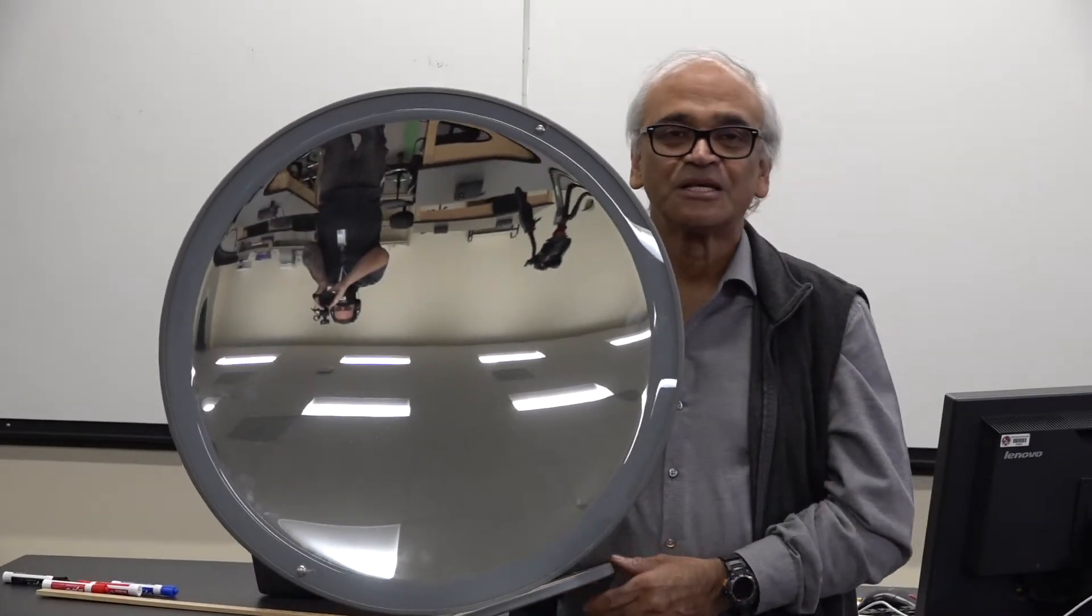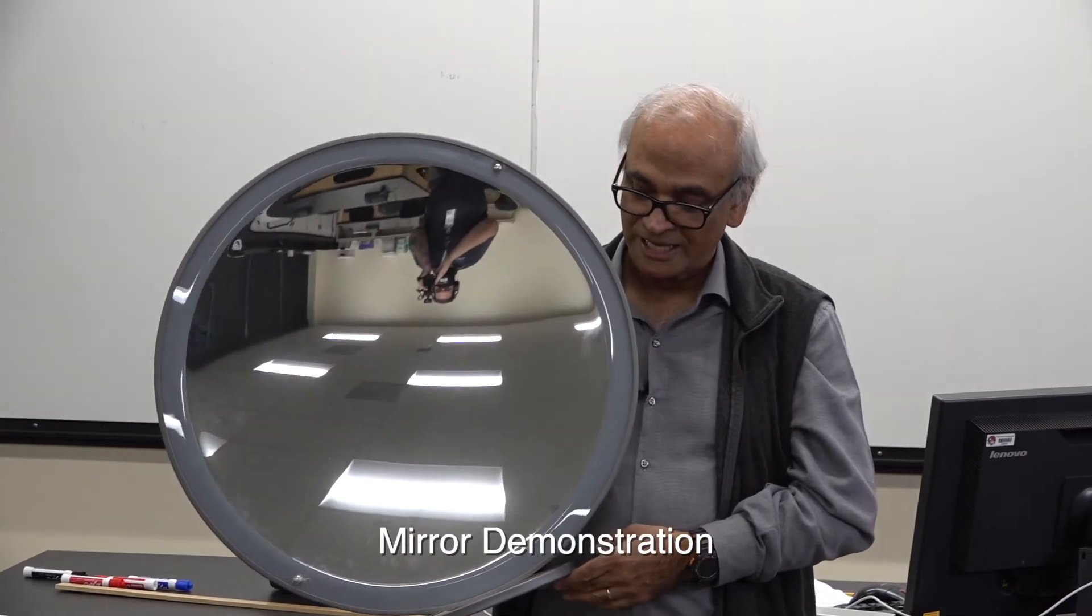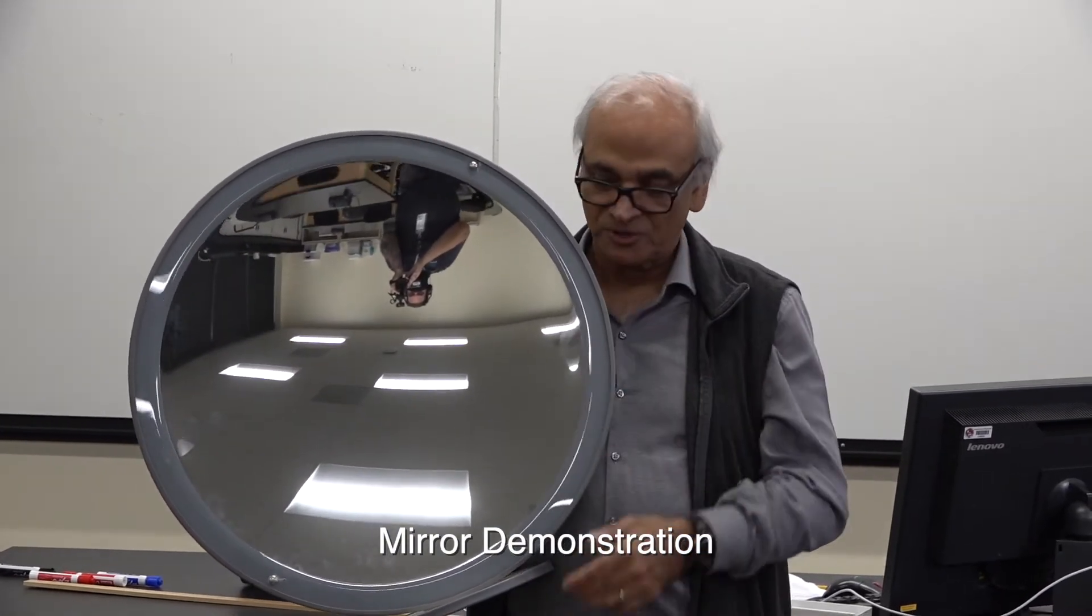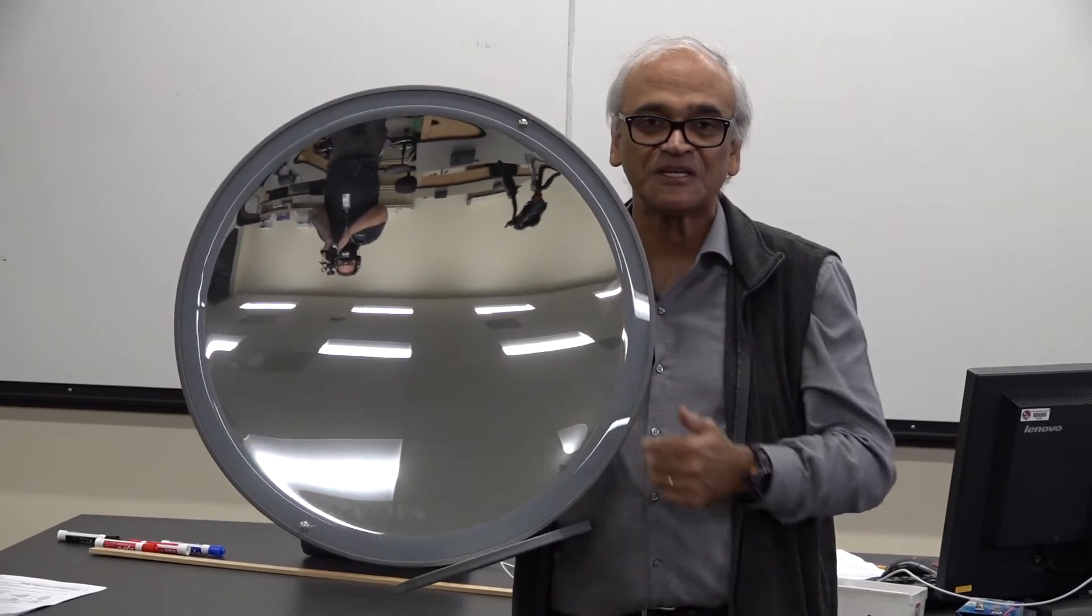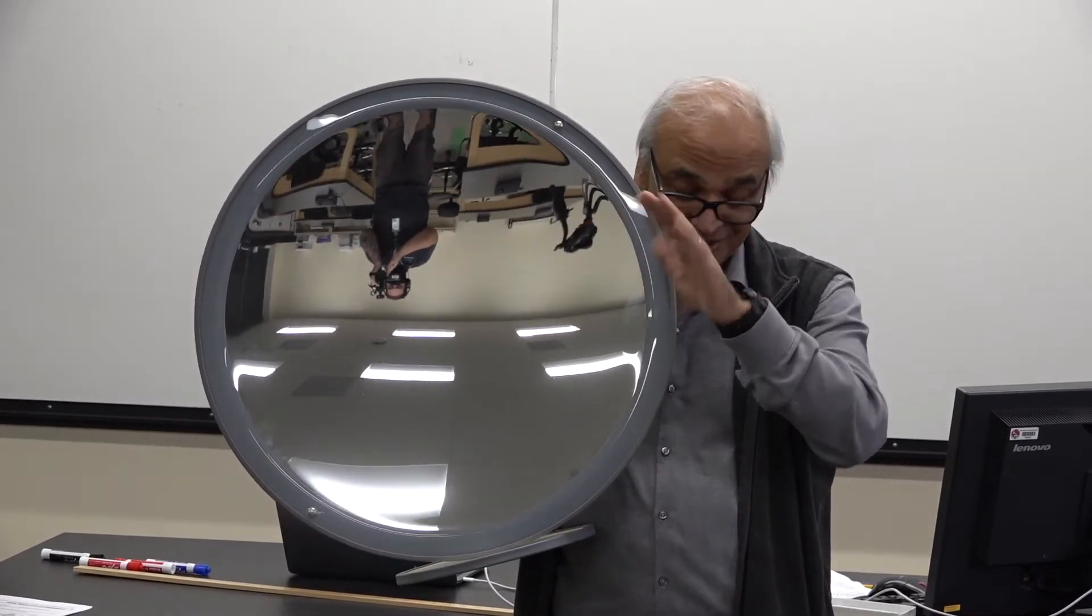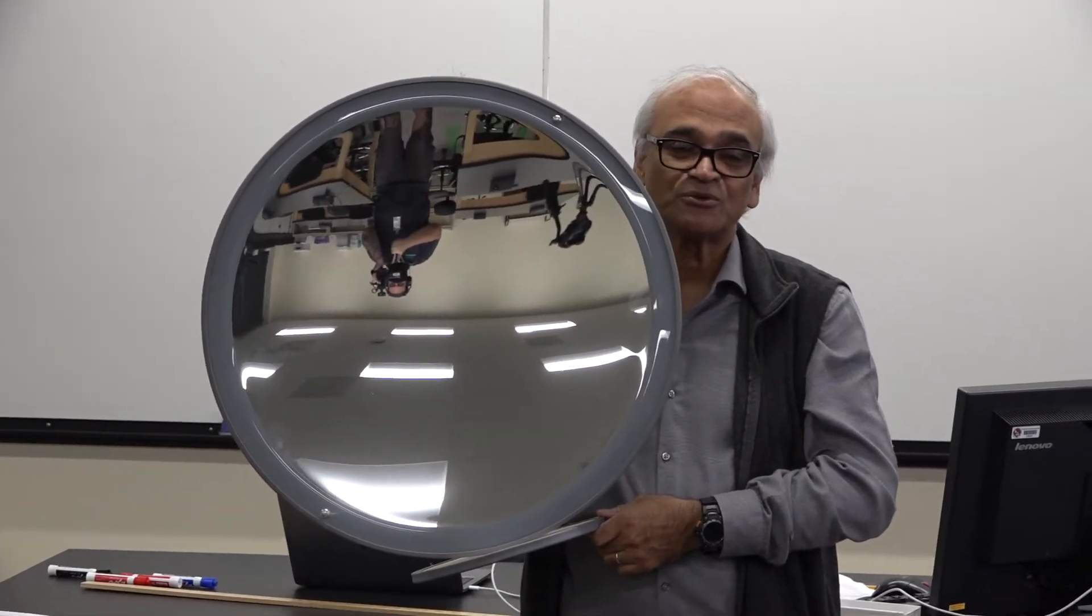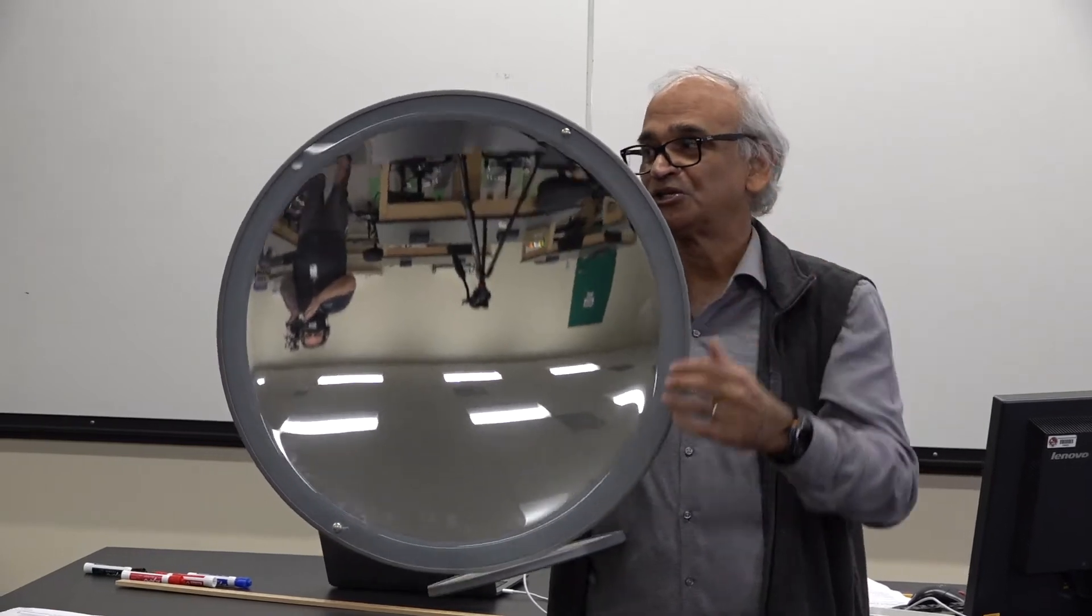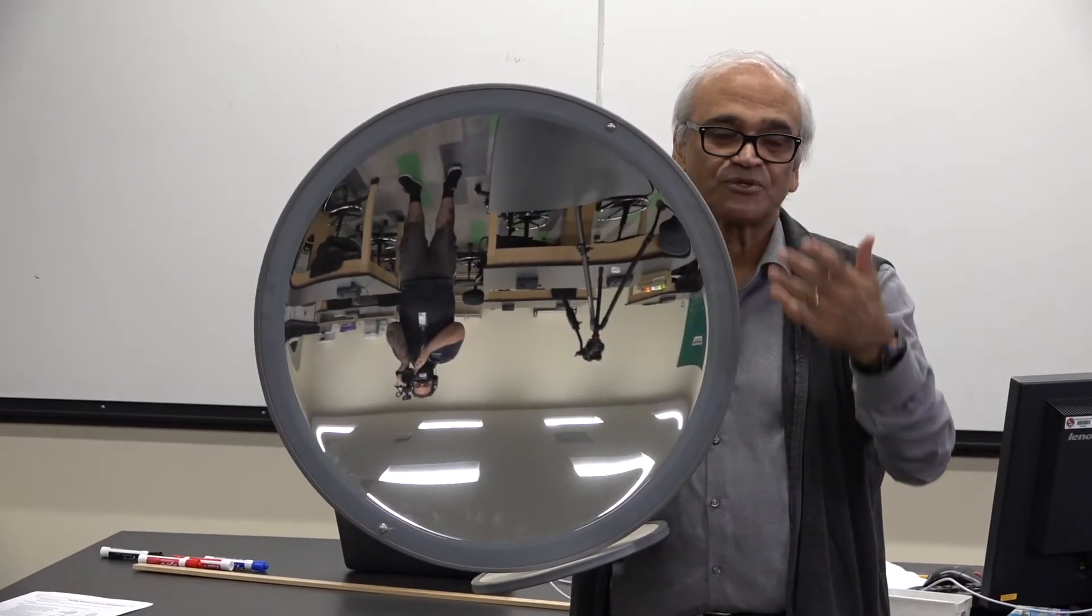Here we have a concave mirror and Brian over there is filming it. You can see him - he should be upside down, not upright. What I'm going to do is walk over to him gradually and you will see that at some point his image should change.